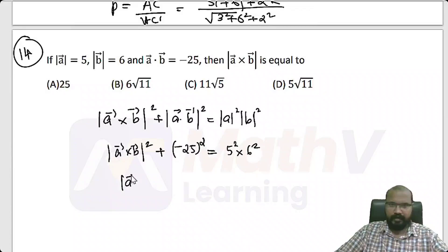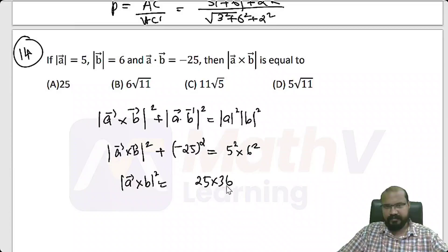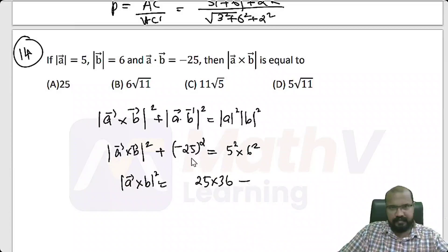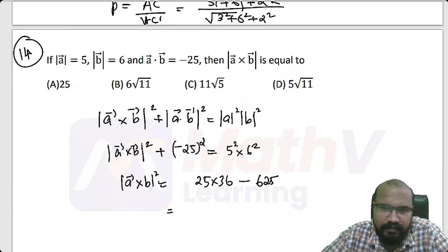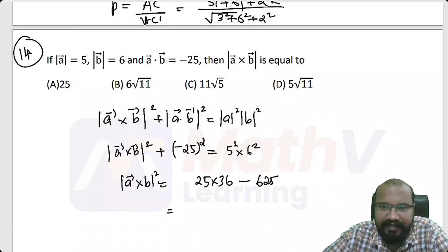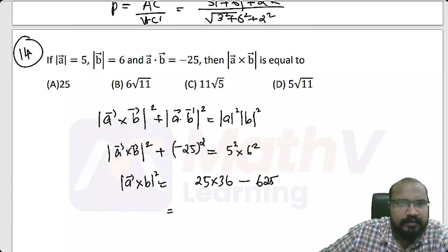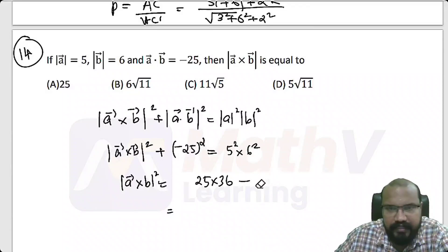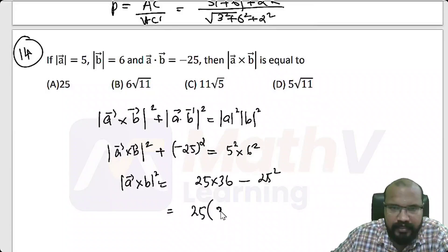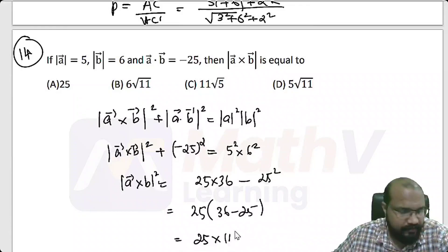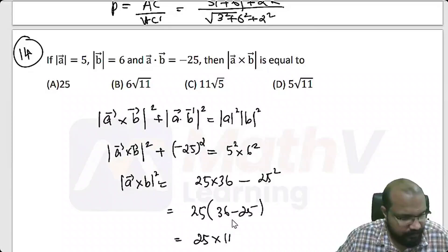Modulus of A cross B whole square is 25 into 36 minus 625. That is 900 minus 625, which equals 25 into 11, giving 275.